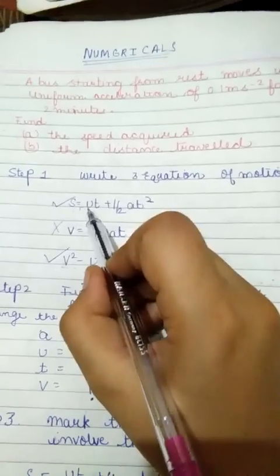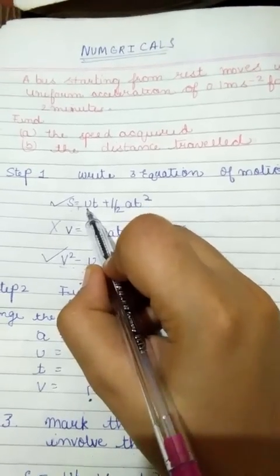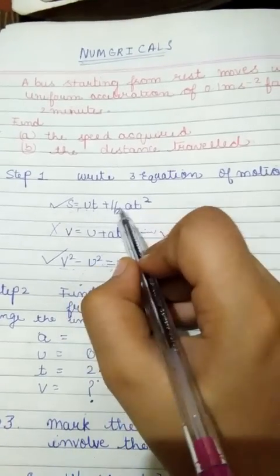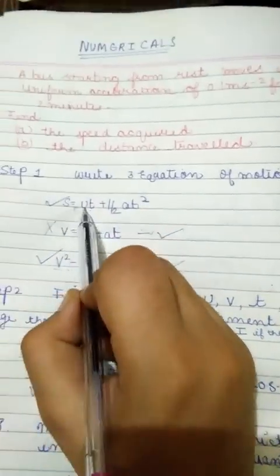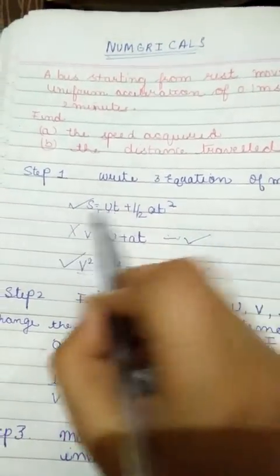We can either use this formula to find s or we can either use this one. It's your choice which is convenient to you. We have used this. Now let's check it out. How to use this formula? We have u. Yes, we have u. We have t. Yes. A. We have also a. So put the values of u, t, a, and we get the s. Simple.